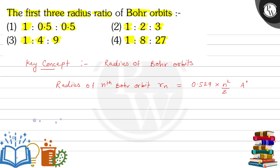Now, let's see here, we have asked the first 3 radius ratio. We can see that there is 0.529 constant value and z is constant. Because there is no change in the atom here, the same atom is constant. So z will be constant. So here we can write that radius is directly proportional to n square. 0.529 constant and z be constant.